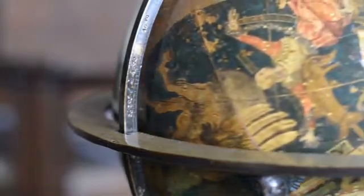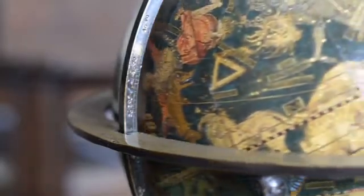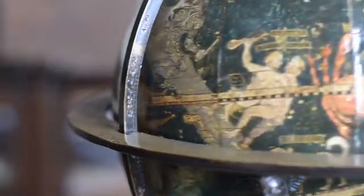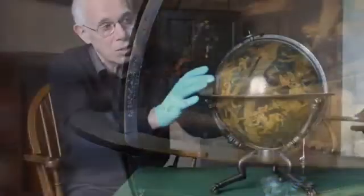And this is an instrument where you have a printed surface which is then colored and then applied, stuck onto a plaster globe and put in this framework so that it can turn round.